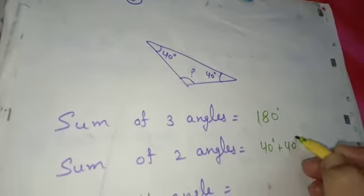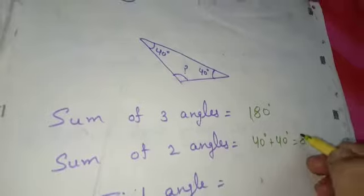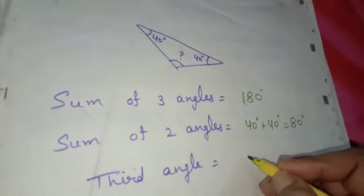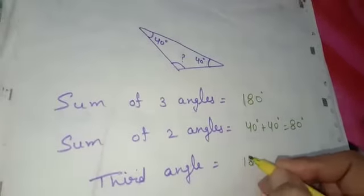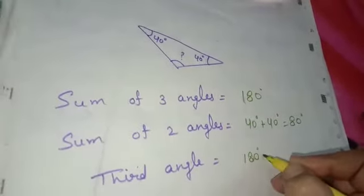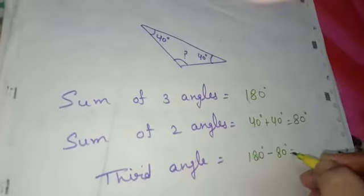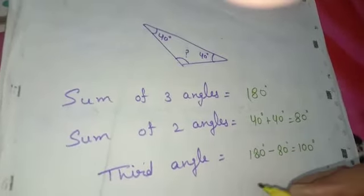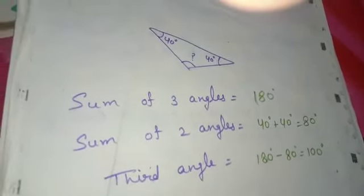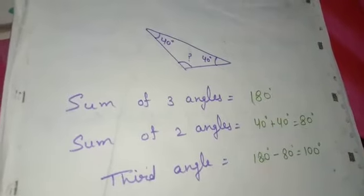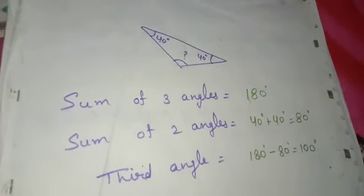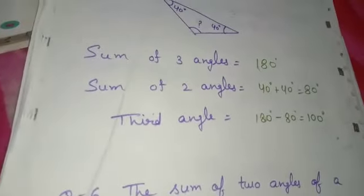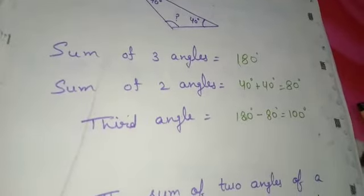40 plus 40 is 80 degrees. The third angle will then be 180 minus 80, which equals 100 degrees. This is the third angle. The remaining part B you will do on your own.